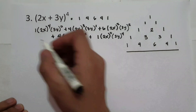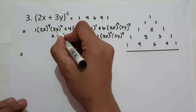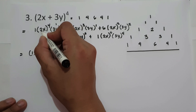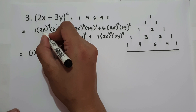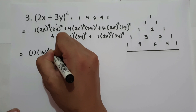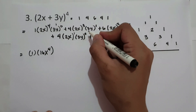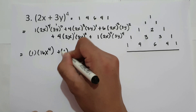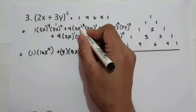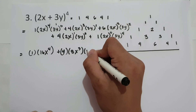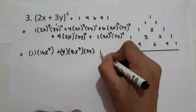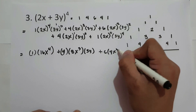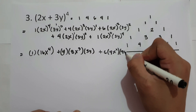3y raised to 0 is 1, and 1 times 1 is 1. Then 2 raised to 4 is 2 times 2 is 4, 4 times 2 is 8, 8 times 2 is 16, so that is 16x to the 4th. Then 3y raised to 1 is 3y, times 4. Or you can write it as 4 times 2 cubed — that is 8 — times x cubed, times 3y. Plus, we have 6 times 2 squared — that is 4 — times x squared, times 3 squared — that is 9 — times y squared.